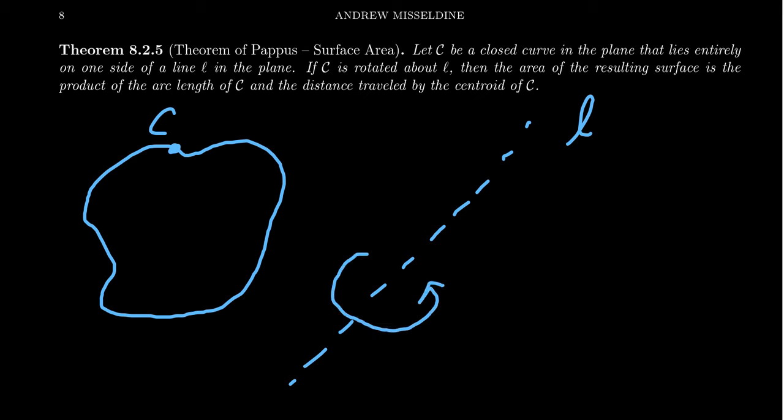Think of that surface. What we have here in front of us is a very poorly designed donut. If we have a closed curve and we spin this around some line L, the area of the resulting surface is going to be the product of the arc length of C and the distance traveled by the centroid of C.